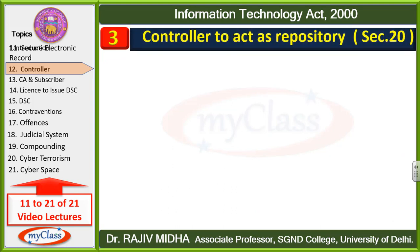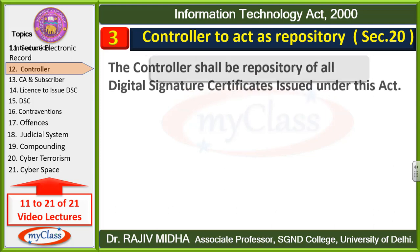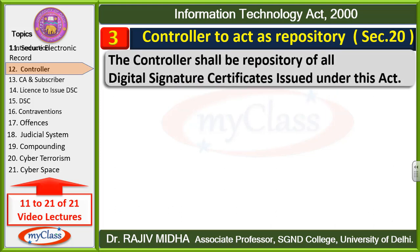The third point: Controller to Act as Repository — Section 20. Students, sabse pahle meaning understand karenge — repository kya hai? Repository ek aisi jagah jahan par aapne bahut saari cheezon ko store kar diya. Controller ne to ek hi cheez ko store karna hai aur woh hai digital signature ka data. The controller shall be repository of all digital signature certificates issued under this act — jitne bhi digital signature certificates issue kiye jaayenge, us related complete jaankari controller ke database ke andar rahegi.